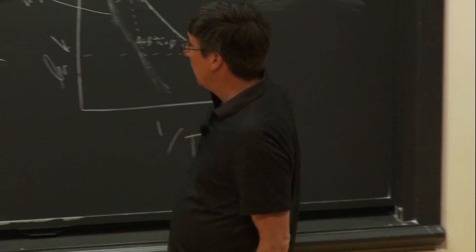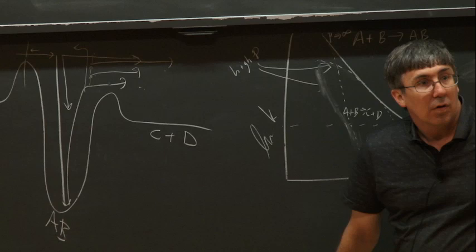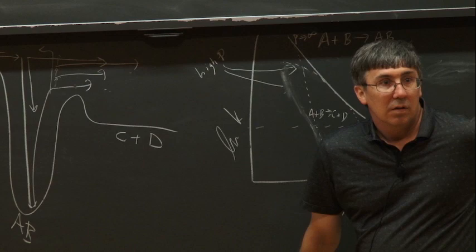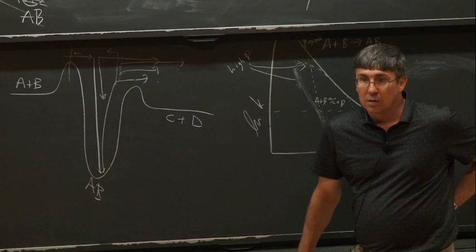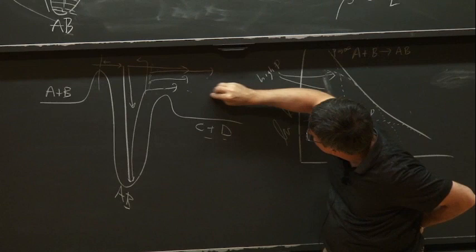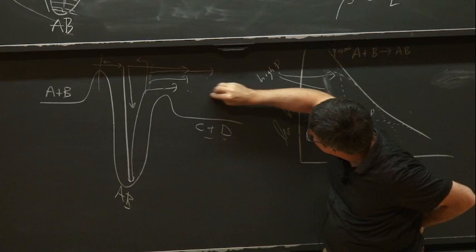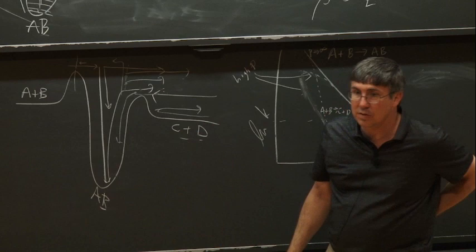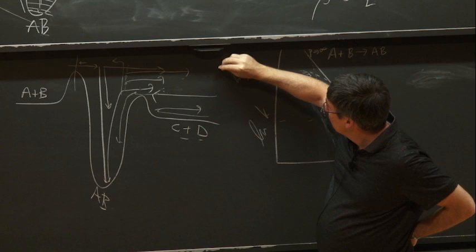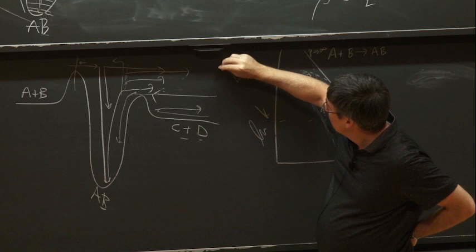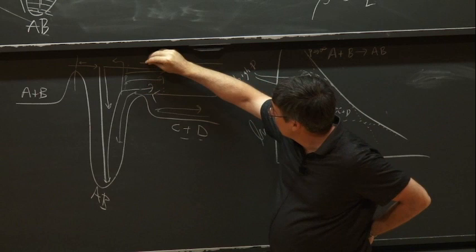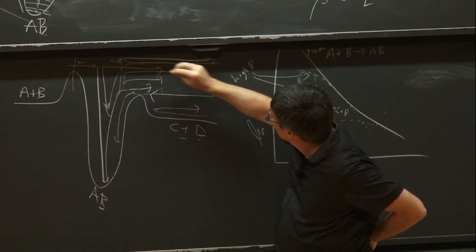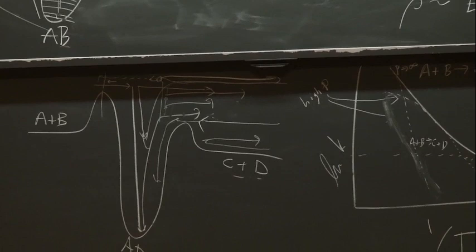What happens if I come in from C plus D? At low temperature and high pressure, I'll mostly make AB — anything that crosses the barrier gets immediately cooled down by collisions. If I increase temperature more, I have population way up in energy — most of these come back, and only a tiny fraction dribbles through to make A plus B. The lifetime of the intermediate at these high energies is very short.